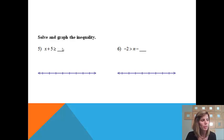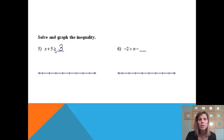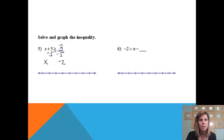We're going to start with this first one: x plus 5 is greater than or equal to 3. What we're going to do is pretty much just pretend like there's an equal sign there, so solve it the same way. Just like a normal equation, we subtract 5 from both sides, and we'll have x is greater than or equal to negative 2.